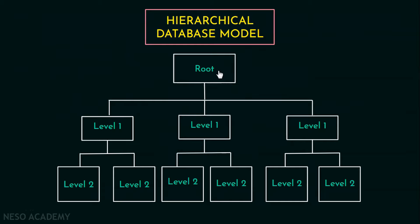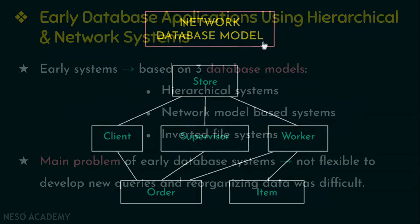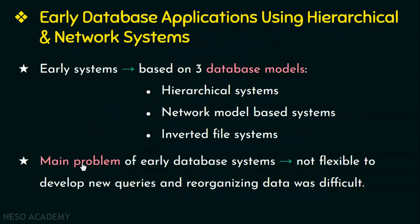The hierarchical model is the first database model, created by IBM in the 1960s. To solve the shortcomings of the hierarchical database model, the network database model was created, but this model did not become dominant, though it was created to solve the drawbacks of the hierarchical database model.